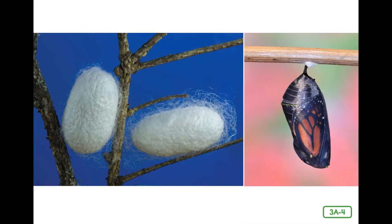Once the larvae have eaten all that they can eat, they take a break. Sometimes people call this next stage a resting stage, but the larvae are hardly resting. A larva often spins a cocoon to protect itself during the pupa stage, when it will remain quite still for several weeks. Inside this shell-like covering, the pupa transforms, or changes, into something that looks altogether different than before. Some insects have a soft cocoon for the pupa stage, and some, like the butterfly, have a harder case called a chrysalis.